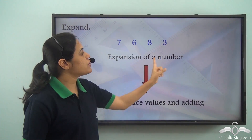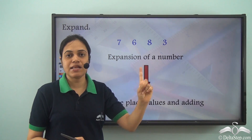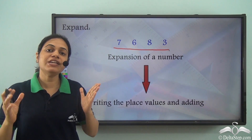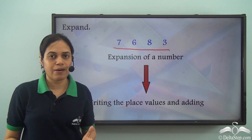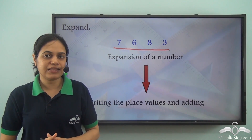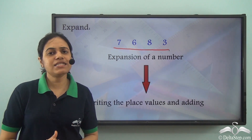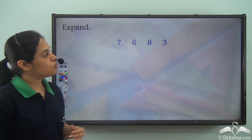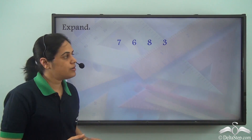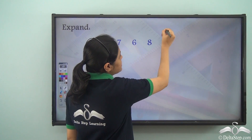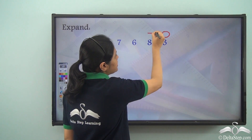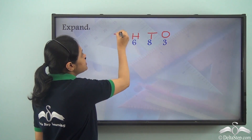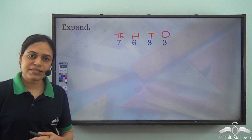So if I need to expand this number, I need to write the place values of the different digits and then add them. Let us see how we can do that. So this is a four digit number. This is the ones place, this is the tens place, hundreds place, and thousands place.